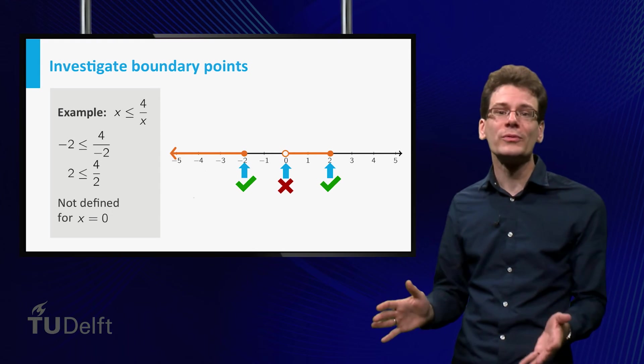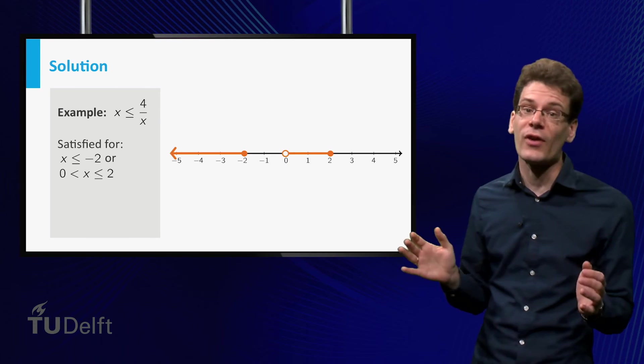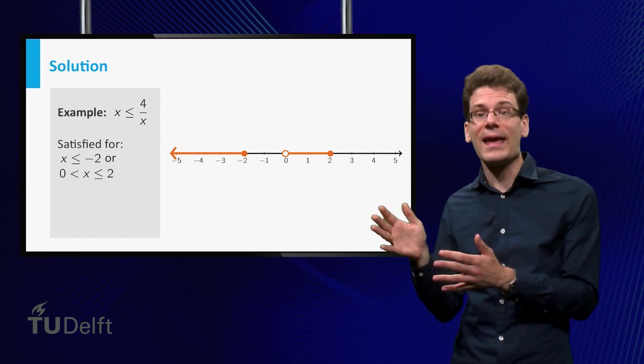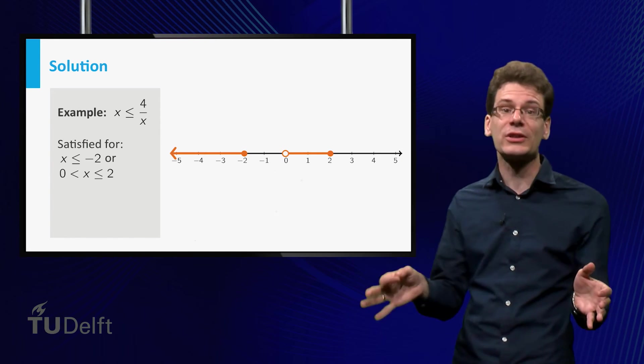We can now gather all the results to find the solutions. This inequality is satisfied for x smaller than or equal to minus 2, and x between 0 and 2, including 2, but excluding 0.